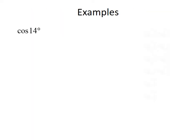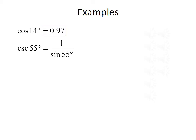For our first example, we want the cosine of 14 degrees. With the calculator in degree mode, evaluating cosine of 14 degrees rounded to two decimal places gives 0.97. Next, we want the cosecant of 55 degrees. We rewrite this in terms of sine: cosecant is 1 over sine, so this is 1 divided by the sine of 55 degrees. Evaluating that with our calculator gives approximately 1.22.